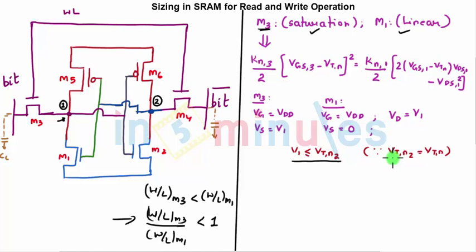And I have assumed that all the nmos transistors have a threshold voltage which is same, so Vtn2 is equal to Vtn. So I'm just going to substitute V1 equal to Vtn in my above equation and substitute gate, drain, and source and get the final value. So let's do that.